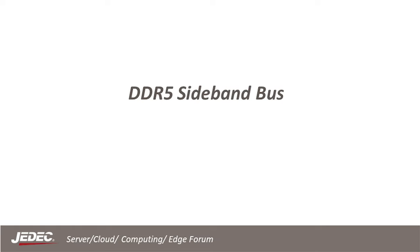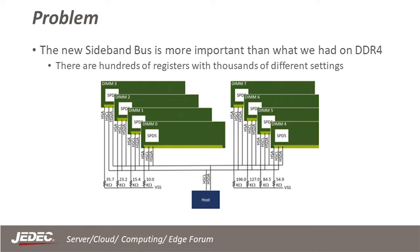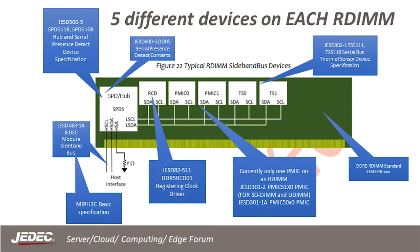Now let's transition to talking about the DDR5 sideband bus. The new sideband bus is much more important and much more complicated than what was used on DDR4, as there are hundreds of different registers and thousands of different settings. The new sideband bus has many devices on a single RDIMM that it needs to communicate with — including an SPD/hub, the RCD, multiple power management devices, and temperature sensors. This new sideband bus uses the physical layer of MIPI I3C.